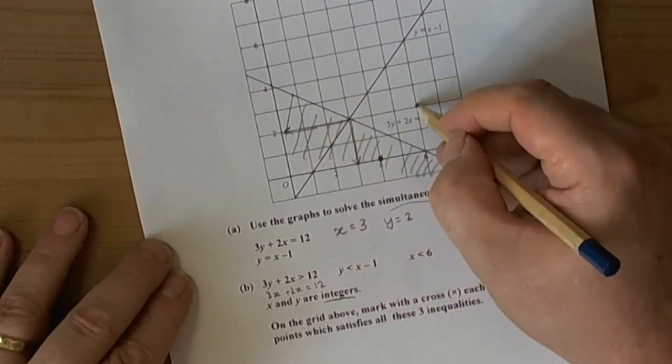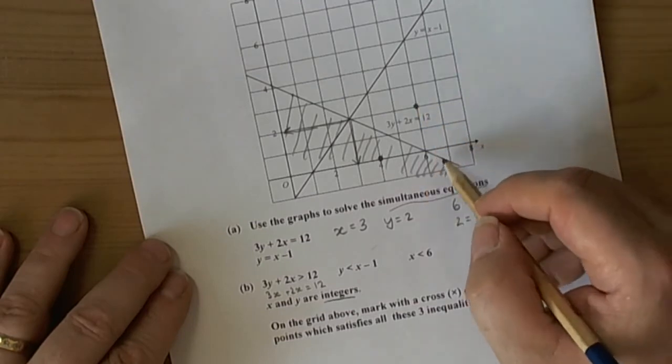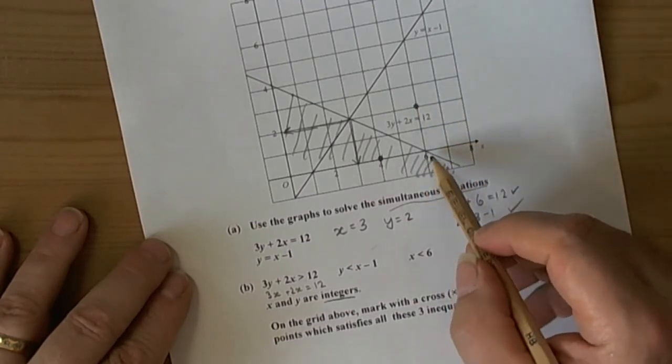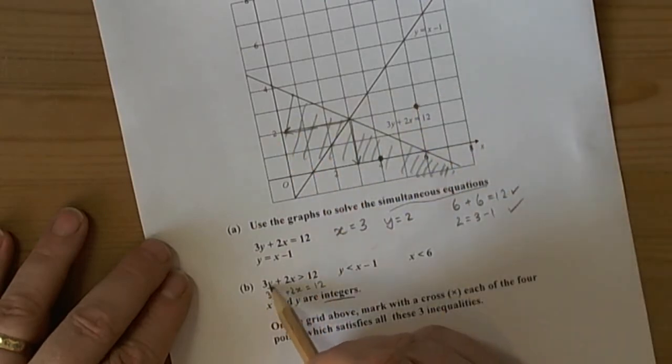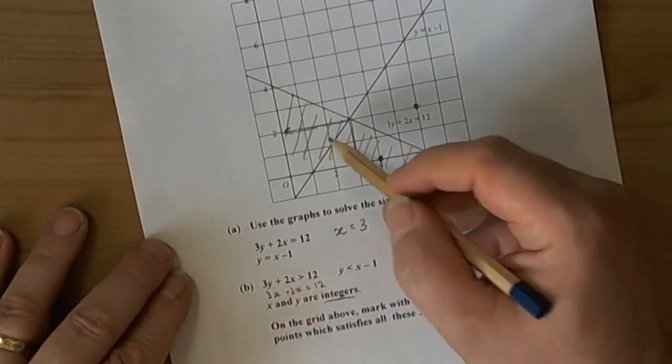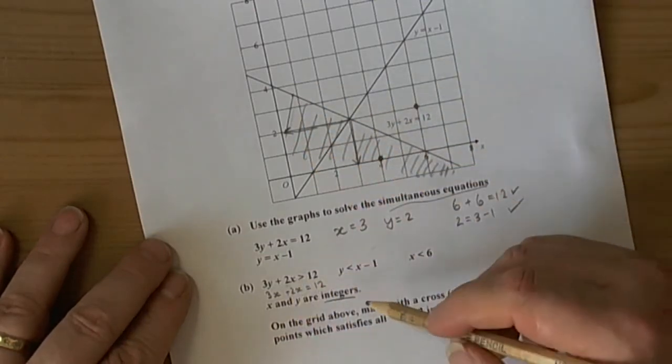Taking a point above, for example where x is 6 and y is 2: 3 times 2 is 6, 2 times 6 is 12, 6 plus 12 is 18. Yes, that is bigger than 12. So shading below the line has worked.